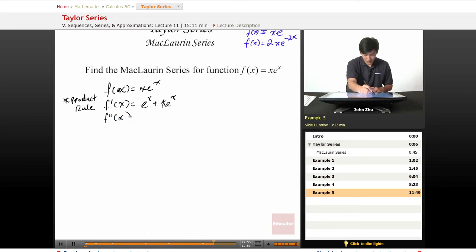So f second prime of x is going to be derivative of this term, e to the x, plus derivative of this term. Well, derivative of this term is simply equal derivative of f of x. So we just replace this section over here.